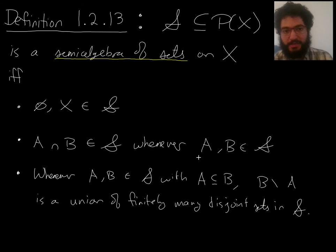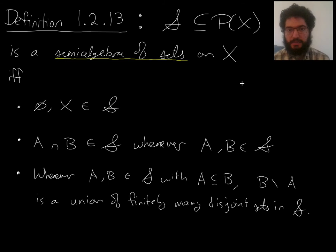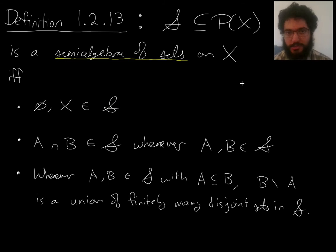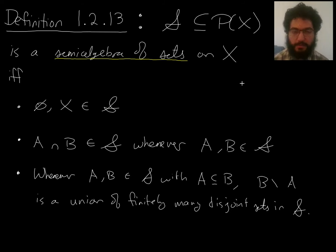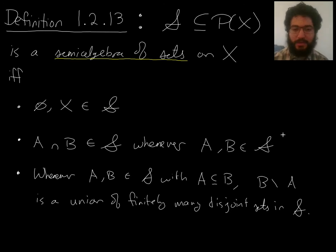I'm going to go back a little bit to define what a semi-algebra of sets on a set is. The reason for this is that often the way we want to define measures is by first defining them on a semi-algebra of sets, and then extending. So we want to first define them on a smaller thing, and so we're defining what that smaller thing is.